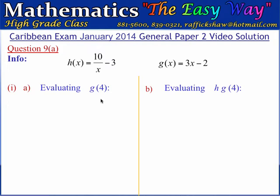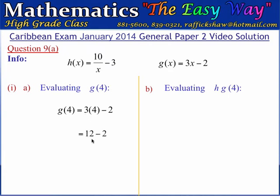Let's do g of 4 first. g of 4 is obtained by simply substituting 4 into the g function. g of 4 is equal to 3 multiplied by 4 minus 2, obtained by substituting 4 for x. 3 times 4 is 12, and we are subtracting 2. So 12 minus 2 is 10. Therefore, g of 4 is equal to 10.